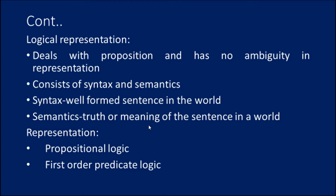Declarative knowledge is knowing about something — it includes concepts, facts, and objects. It is descriptive knowledge expressed in declarative sentences, and it is simpler than procedural knowledge. Procedural knowledge is the imperative knowledge of knowing how to do something; it includes rules, strategies, procedures, and agendas, and can be directly applied to any task. Meta-knowledge is knowledge about other types of knowledge. Heuristic knowledge represents expert knowledge in a field. Structural knowledge is basic knowledge for problem-solving, describing relationships between concepts such as 'a kind of,' 'part of,' and groupings.